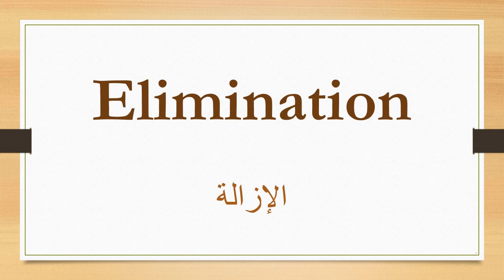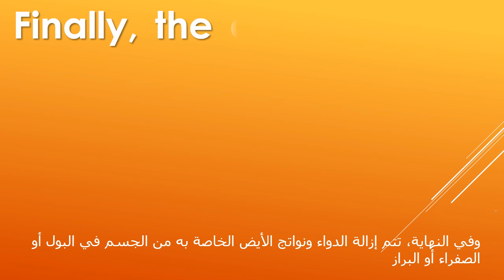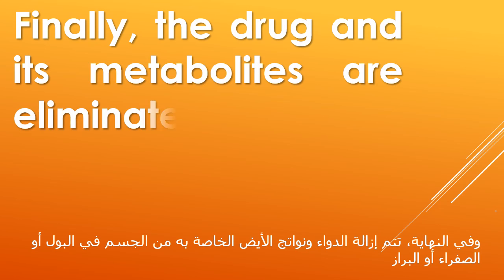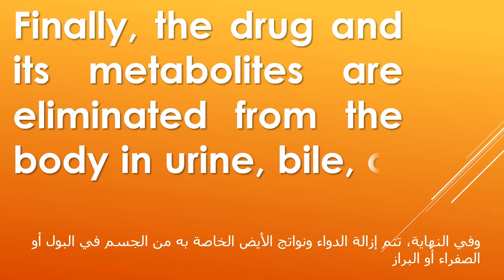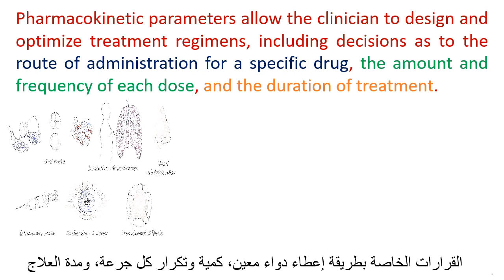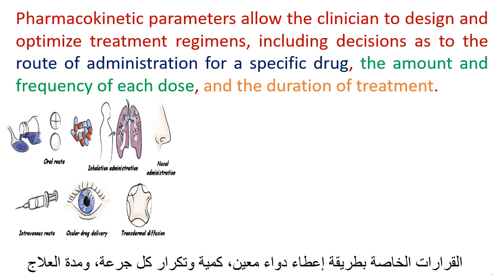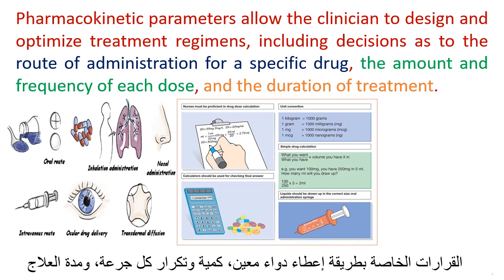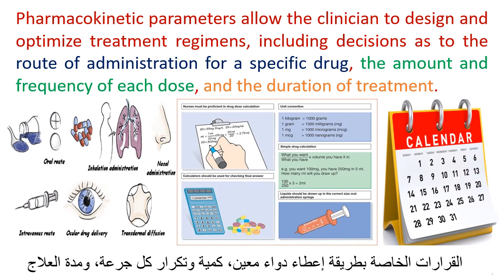Finally, the drug and its metabolites are eliminated from the body in urine, bile, or feces. Pharmacokinetic parameters allow the clinician to design and optimize treatment regimens, including decisions as to the route of administration for a specific drug, the amount and frequency of each dose, and the duration of treatment.